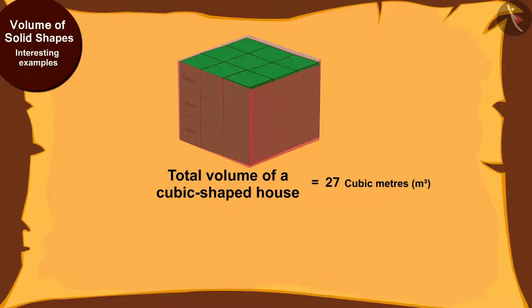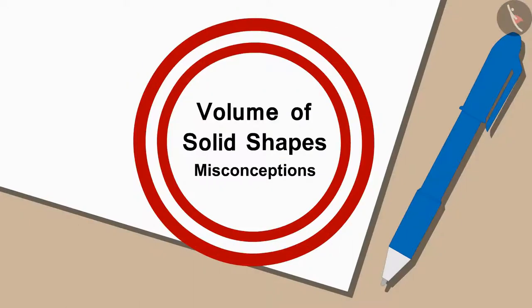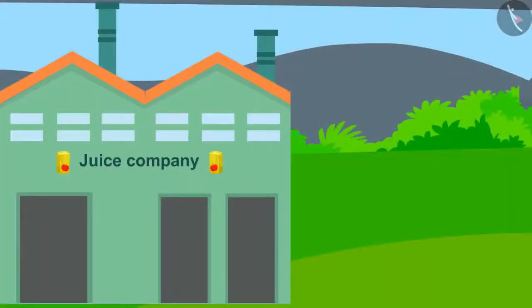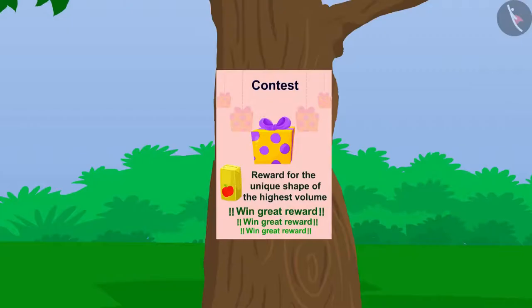In the previous video we learned about volume of solid shapes. In this video we will see some misconceptions related to this. A new company has started production of juice in Champapur. This company advertised that people of Champapur will have to make a unique shape using juice cartons.